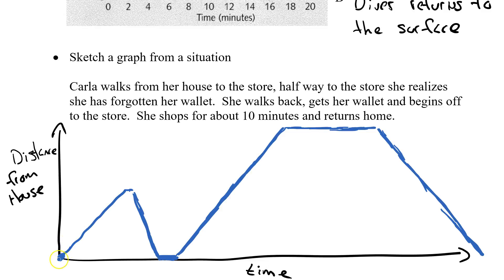And there we go. Carla walks from her house to the store. Halfway, she realizes she forgets her wallet. She walks back home a little quicker. Looks for the wallet and finds it. Goes back to the store. Shops at the store for about 10 minutes. Her distance from her house is not changing while she is shopping. And then she walks all the way back home. So we sketched the graph from this situation.